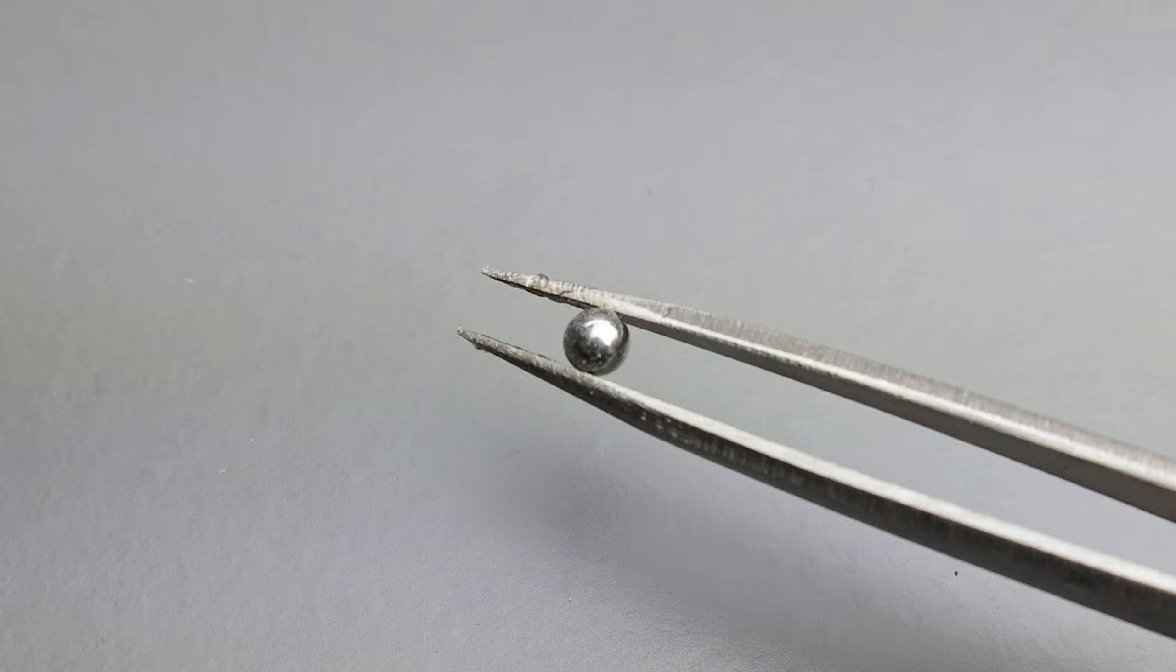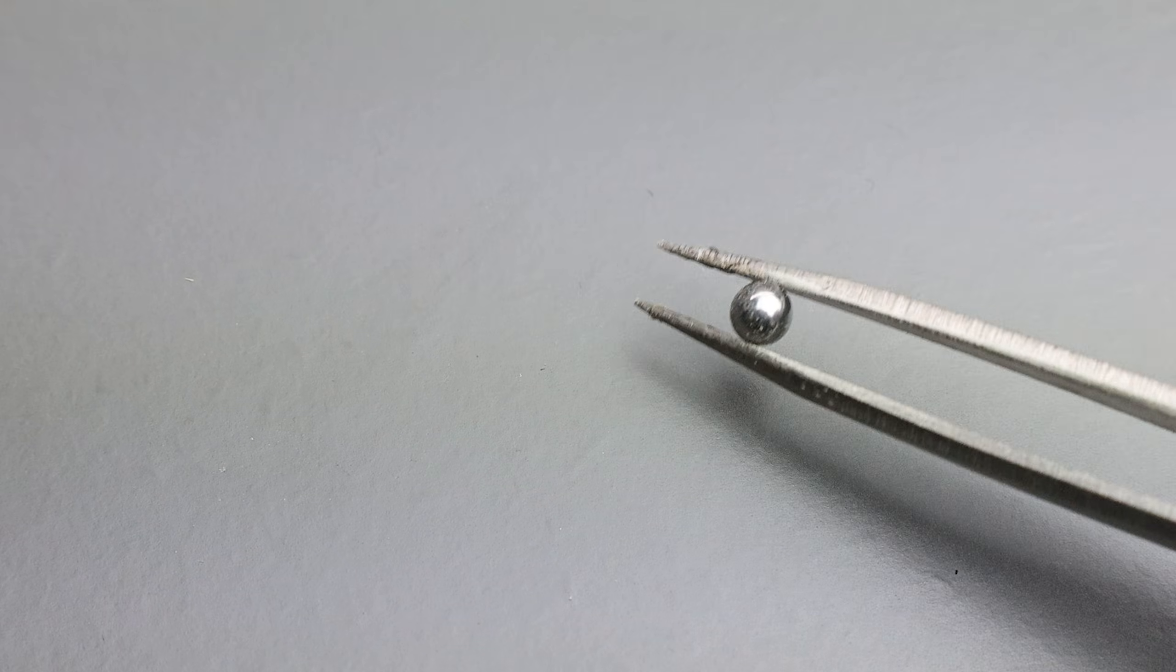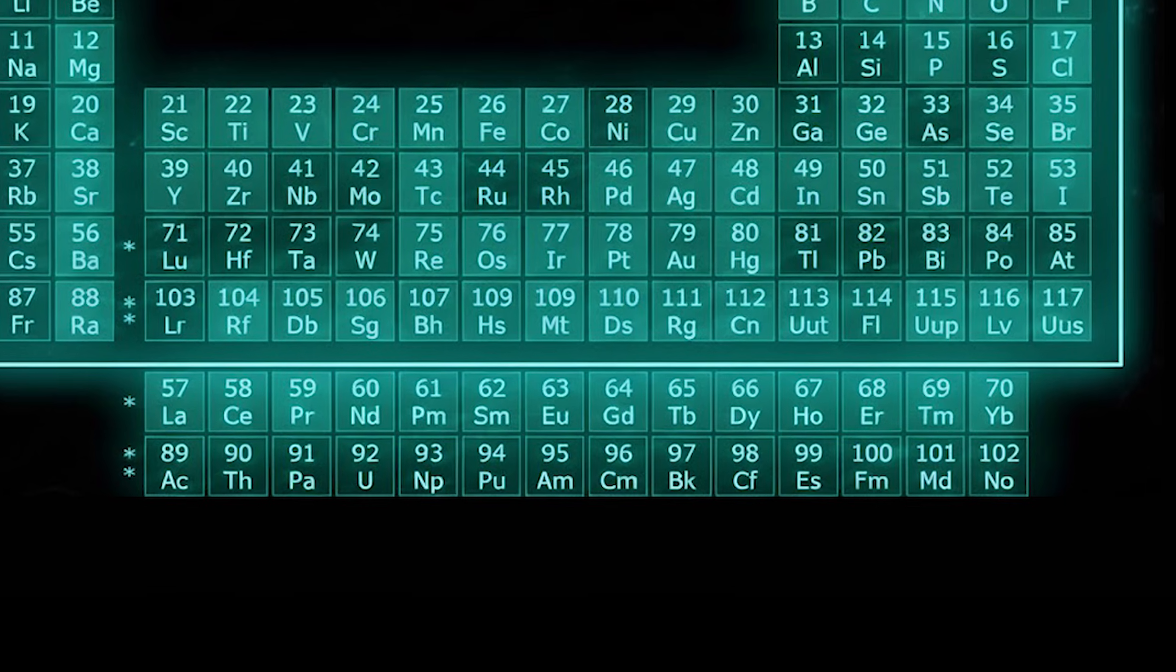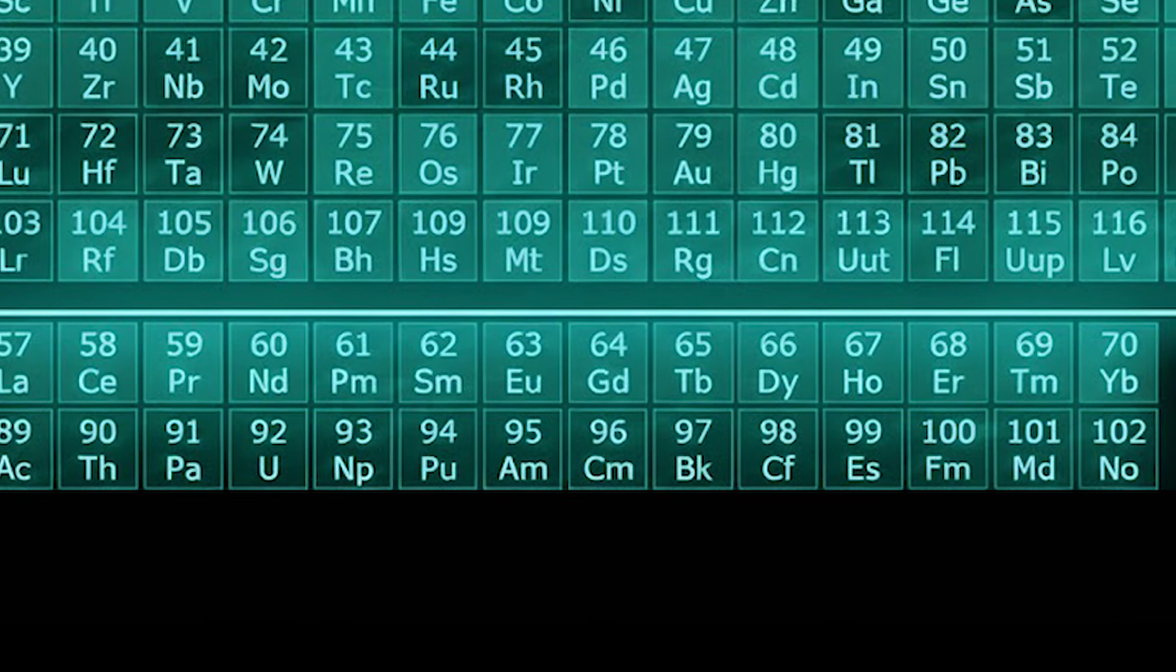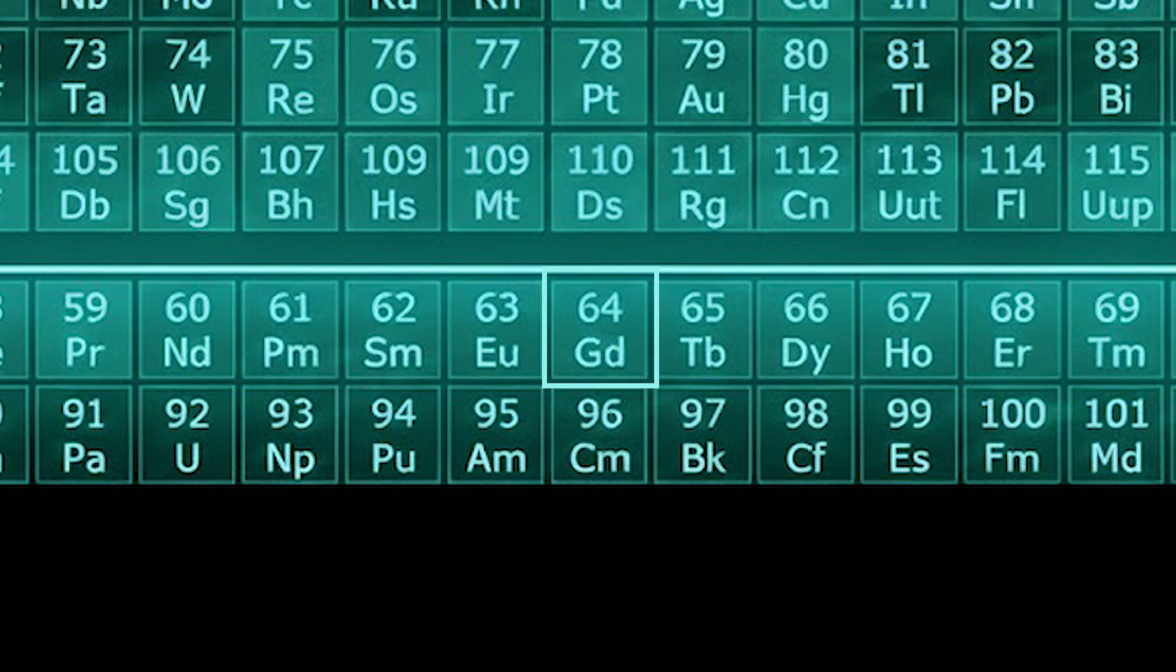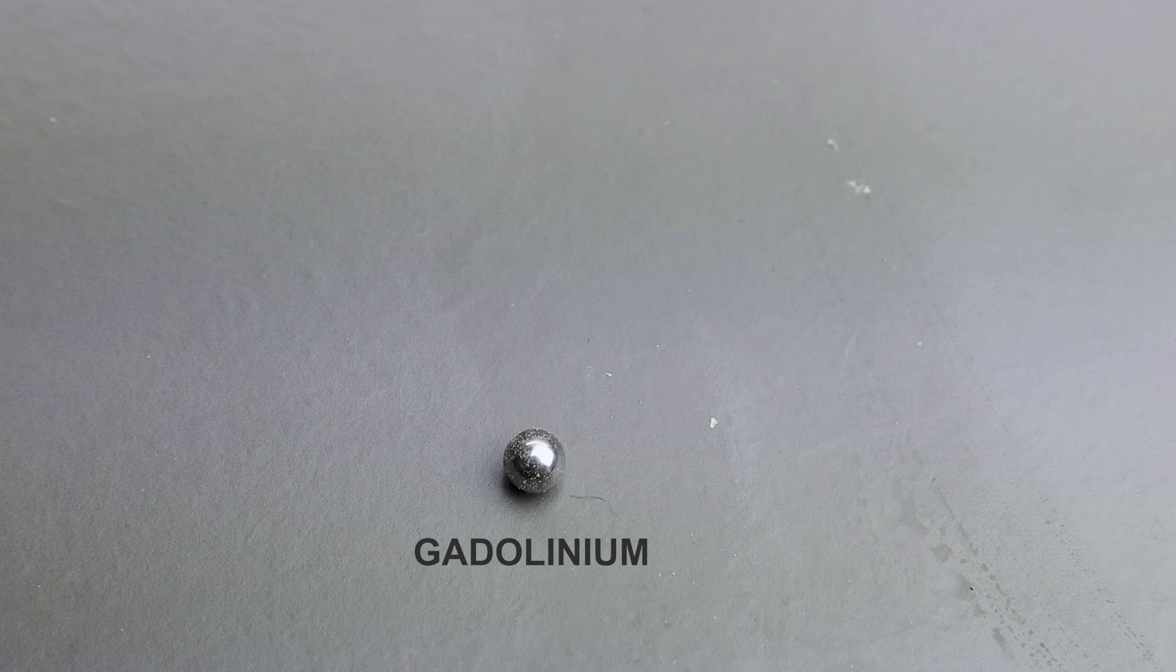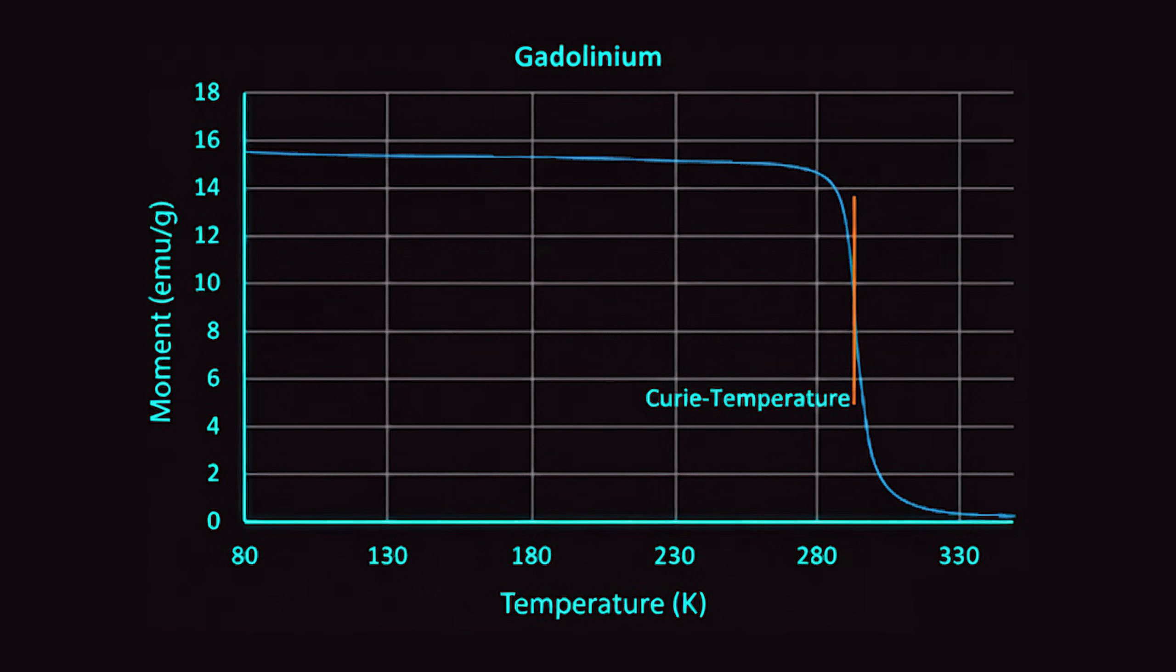To understand why this sphere is moving, we have to look at the building blocks of the universe. Deep within the periodic table, at atomic number 64, lies an element called gadolinium. It's part of the lanthanide series, and it possesses a physical property that is almost unique among all elements on Earth: a room temperature Curie point.